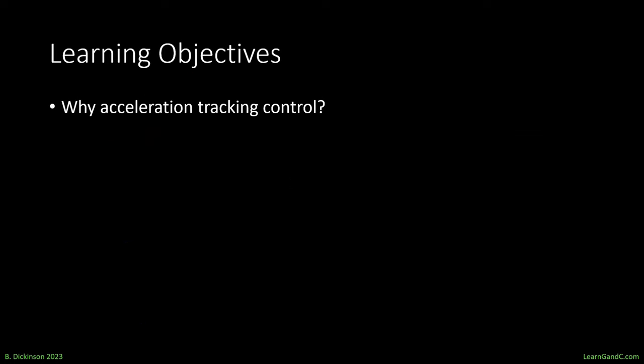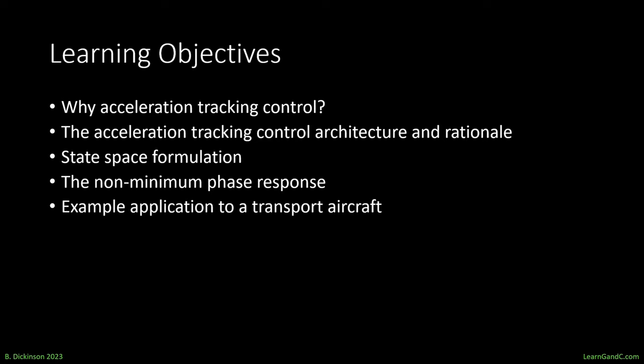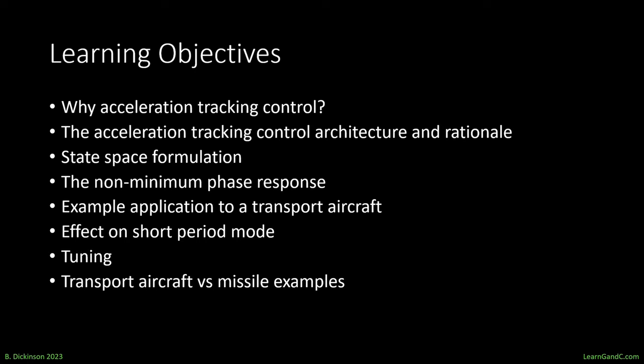To review, we've covered how acceleration control could be used to steer a vehicle with direct acceleration, which is the so-called skid to turn, or a roll to a desired maneuver plane, the so-called bank to turn. We discussed acceleration PI control architecture and rationale. We looked at the state space formulation, the non-minimum phase response. We applied the controller to a transport aircraft and looked at the effect on the short period as we tuned it for various damping and tracking gains. We finally ended with a comparison between acceleration control of the aircraft and missile. And from this, we now have a better understanding of acceleration control for aircraft.